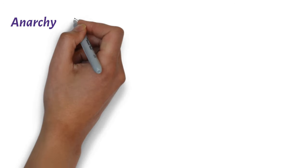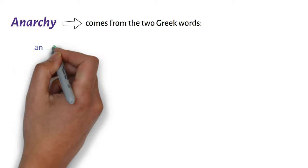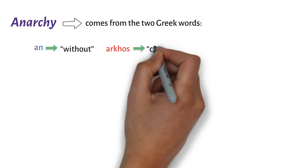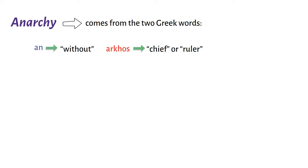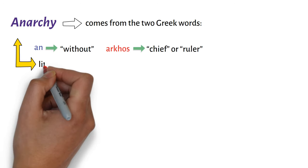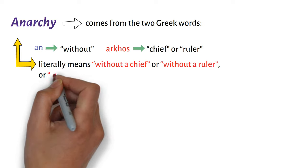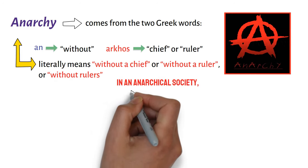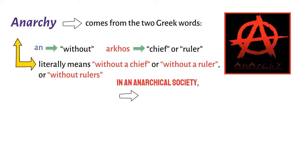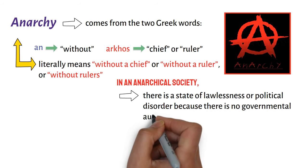On Anarchy. The word anarchy comes from the two Greek words, an, which means without, and archos, which means chief or ruler. Thus, anarchy literally means without a chief, or without a ruler, or without rulers. Hence, in an anarchical society, there is a state of lawlessness or political disorder because there is no governmental authority.